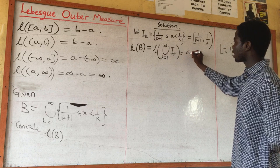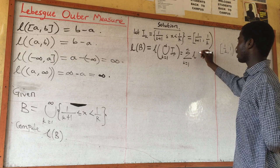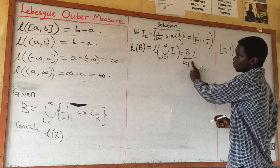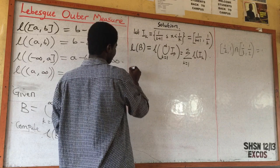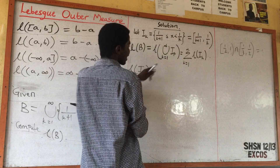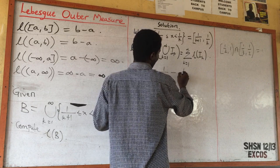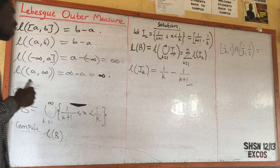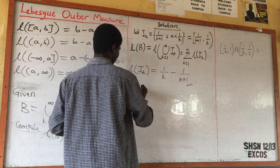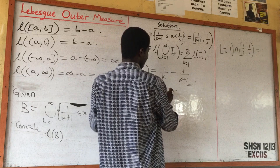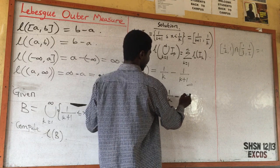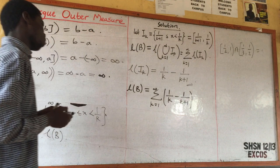By the property of length, since I_k is an interval, the length of I_k is 1/k minus 1/(k+1). So the length of B equals the summation of k from 1 to infinity of (1/k minus 1/(k+1)).